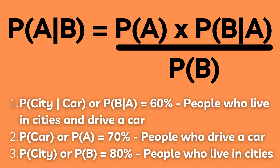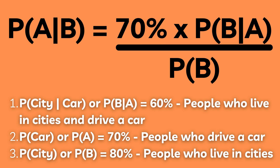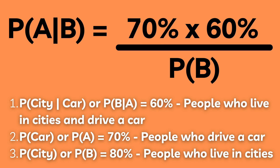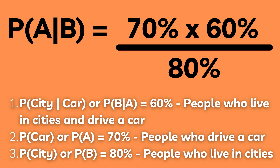To calculate this, we simply plug the values into the formula: probability of car times probability of city given car, divided by probability of city. So 70 percent times 60 percent divided by 80 percent, which equals 52.5 percent.